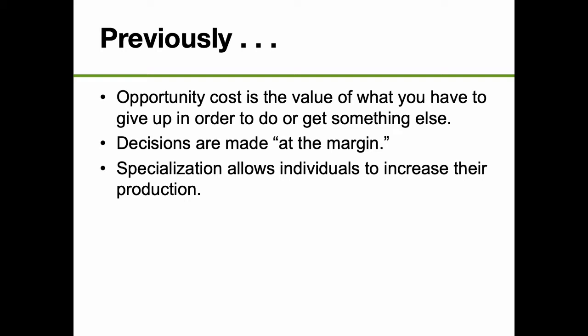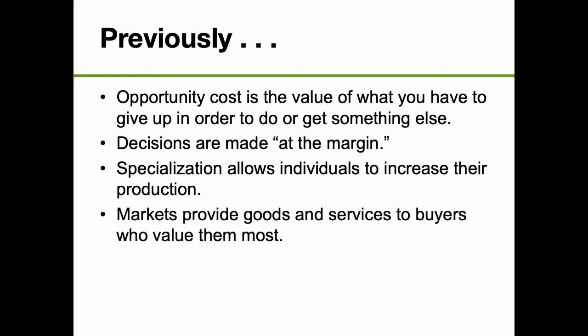Specialization allows individuals to increase their production — we talked about that in the context of Batman and Robin. Batman specializes in one type of crime fighting, Robin in another. They have their comparative advantages and do those things so the duo can be more productive. Most recently, we talked about markets and how they provide goods and services to buyers who value them most. Markets are incredibly efficient because they generate the most total surplus — consumer surplus and producer surplus — and markets seeking equilibrium will maximize those surpluses.